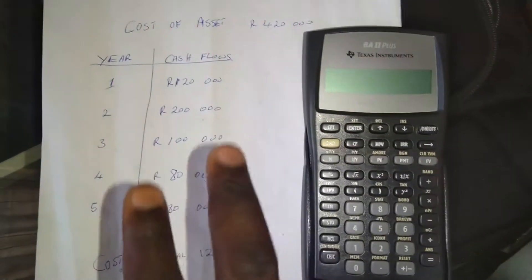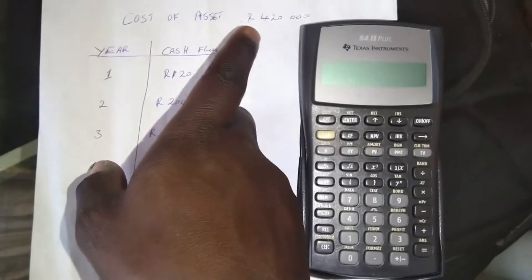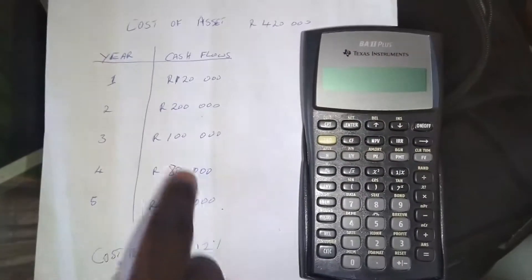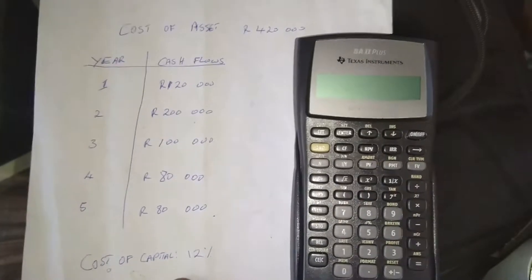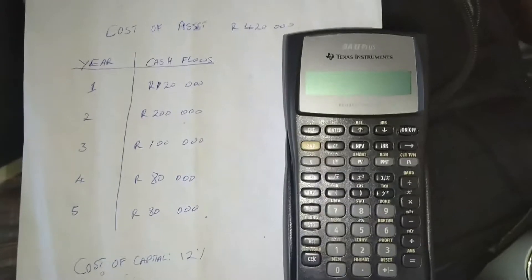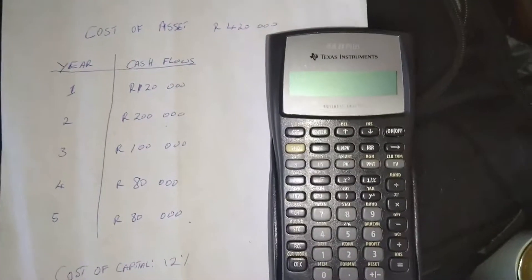We are given an example here. We are told that the cost of the asset is 420,000 rand. We are given cash flows from year one to year five, and we are told that the cost of capital is 12%. So what we have to do here is to calculate the net present value and the IRR for the project.